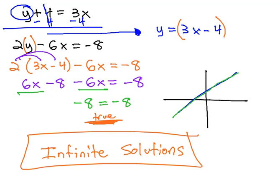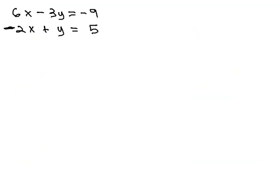But that's not the only odd thing that can happen. Consider this problem. 6x minus 3y equals negative 9, and negative 2x plus y equals 5.